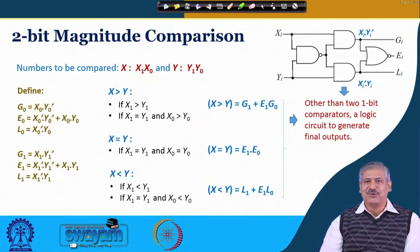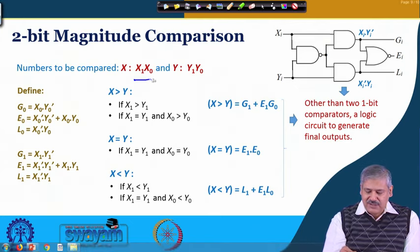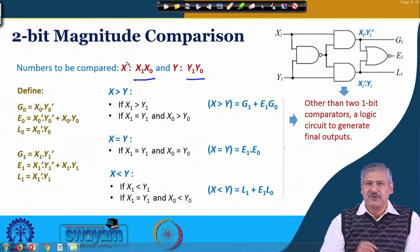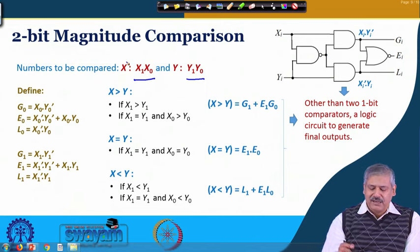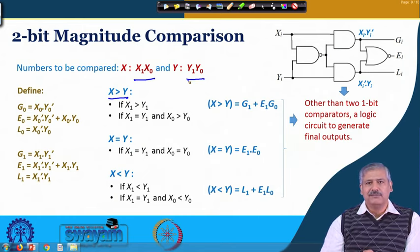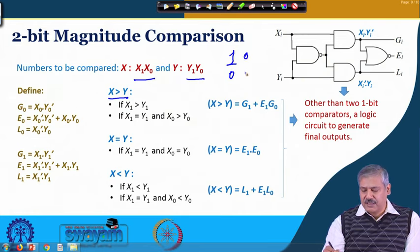Now let us look at how to do 2-bit comparison. For 2-bit comparison, the numbers are x1 x0 and y1 y0, where x1 is the more significant bit and x0 is the less significant bit. We know that x as a whole will be greater than y if x1 is greater than y1 — that is, if x1=1 and y1=0.